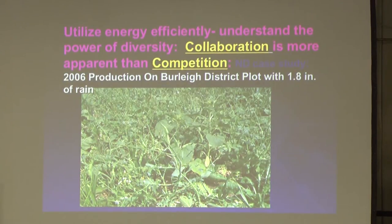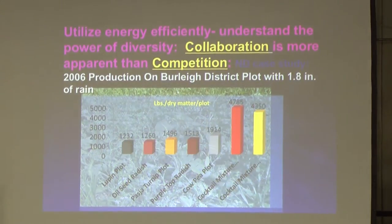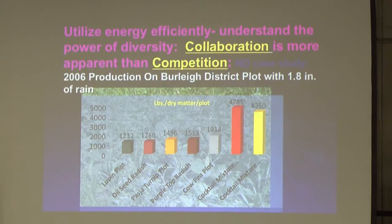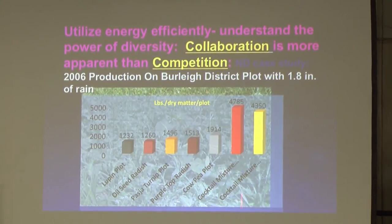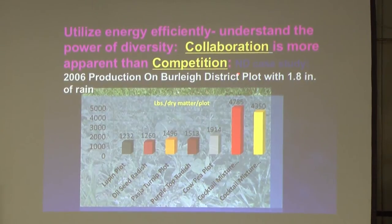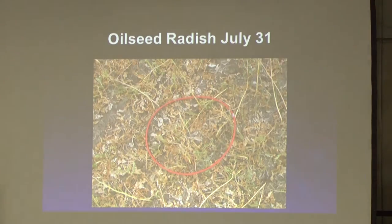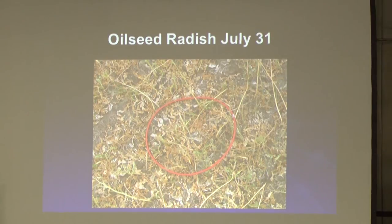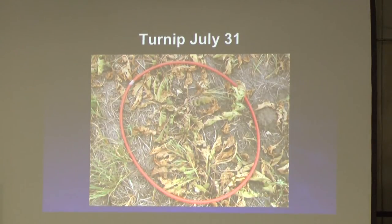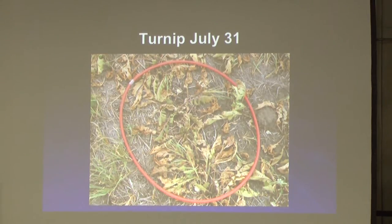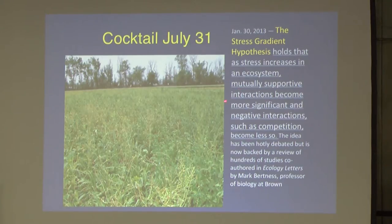Jay and Gabe and the North Dakota guys planted a plot that only got 1.8 inches of rain on old CRP land. They planted lupin, oilseed radish, purple cowpea, and a cocktail mix. Look at the biomass on the multi-species mix compared to each species planted alone. When you throw them all together, something extraordinary happens.